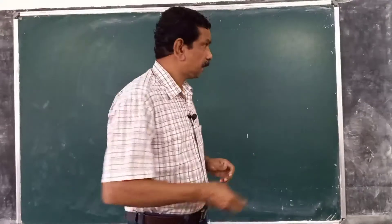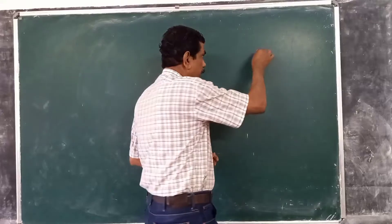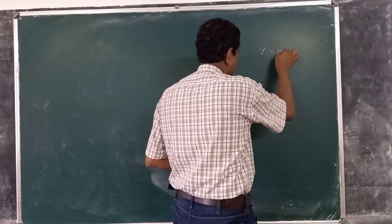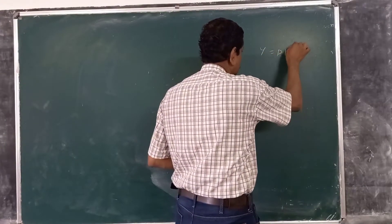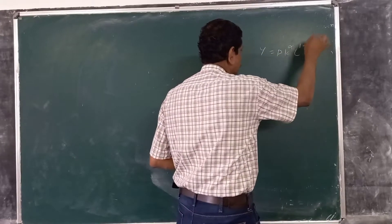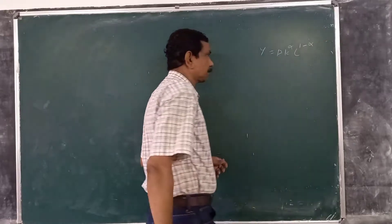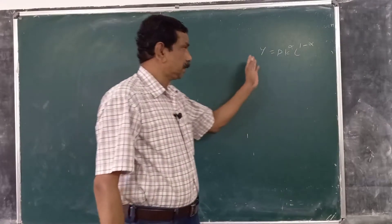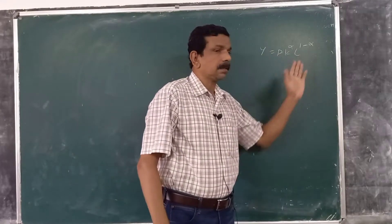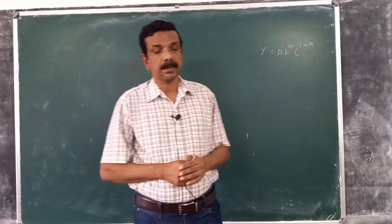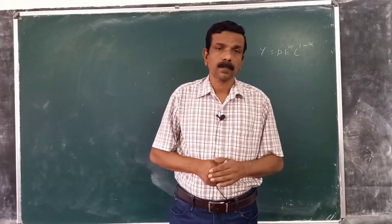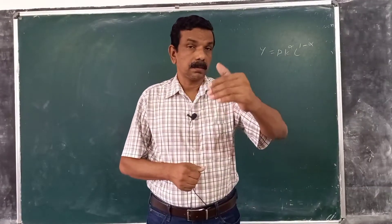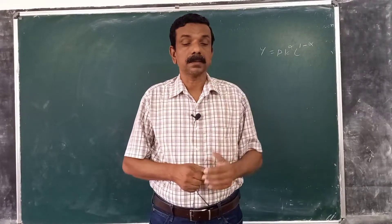The production function which we assume is y equal to A times k raised to alpha, n raised to 1 minus alpha. That is the Cobb-Douglas production function exhibiting constant returns to scale.